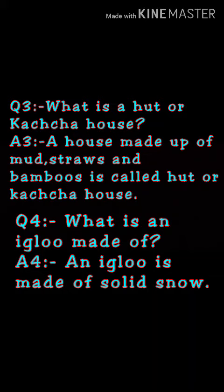Question number 4: What is an igloo made of? The answer is: an igloo is made of solid snow.